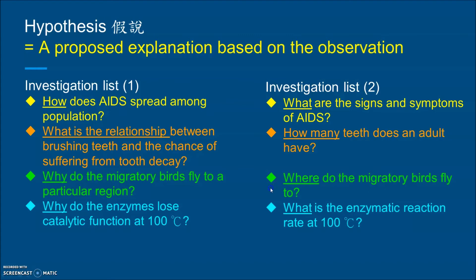The fourth pair: on the left, why do enzymes lose catalytic function at 100 degrees Celsius — we investigate the reason behind it. On the right hand side: what is the enzymatic reaction rate at 100 degrees Celsius — we put the enzyme with a substrate at 100°C and measure the reaction rate.